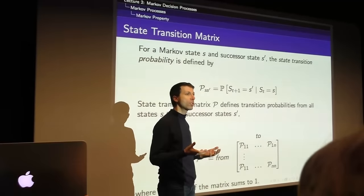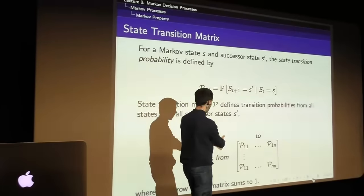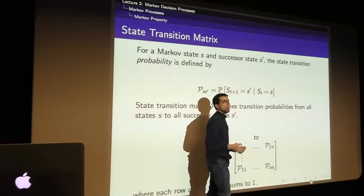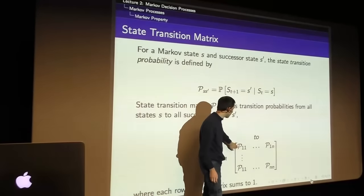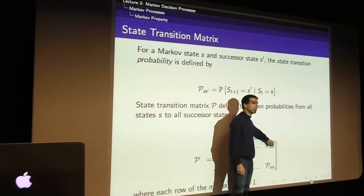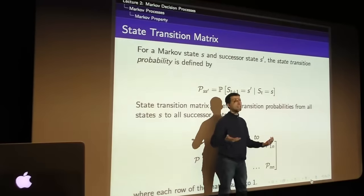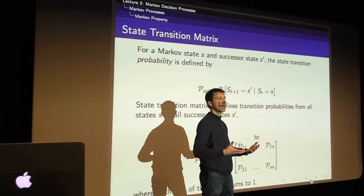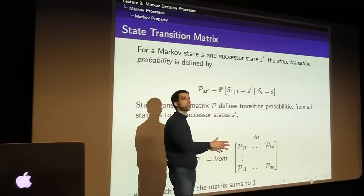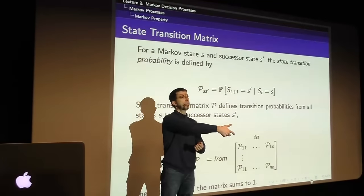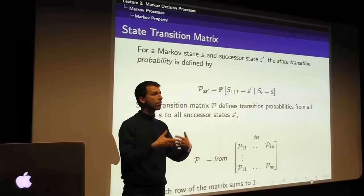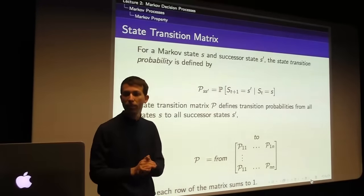The transition probability matrix tells us for each state we might start in, the probability of transitioning to any other state. Each row completely characterizes transitions from one possible starting place. If I start in state one, it tells me the probability of ending up in state one, two, three, all the way to n states. This single matrix gives the complete structure of the Markov problem, and we can sample repeatedly from it to draw sequences from this Markov process.